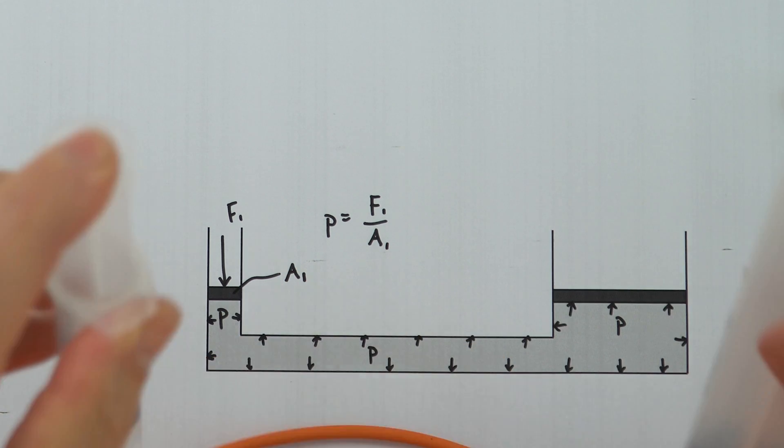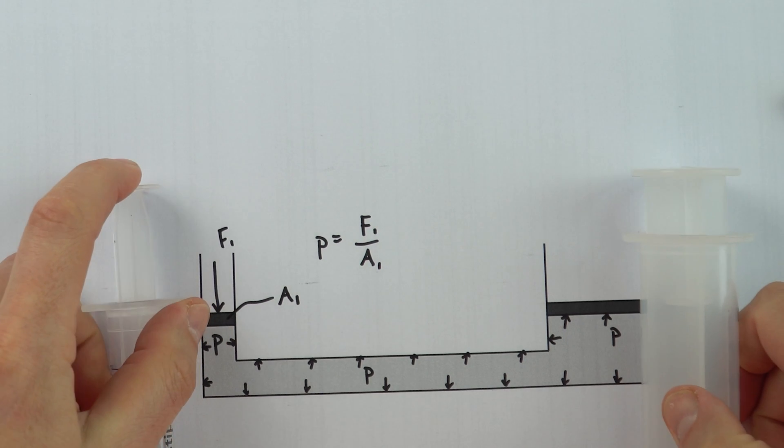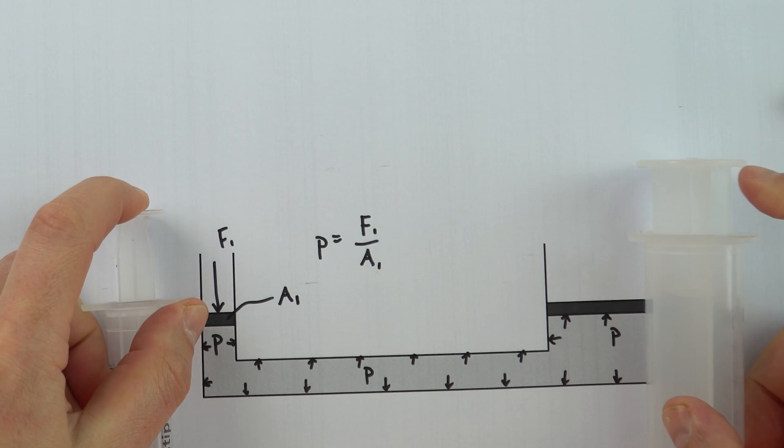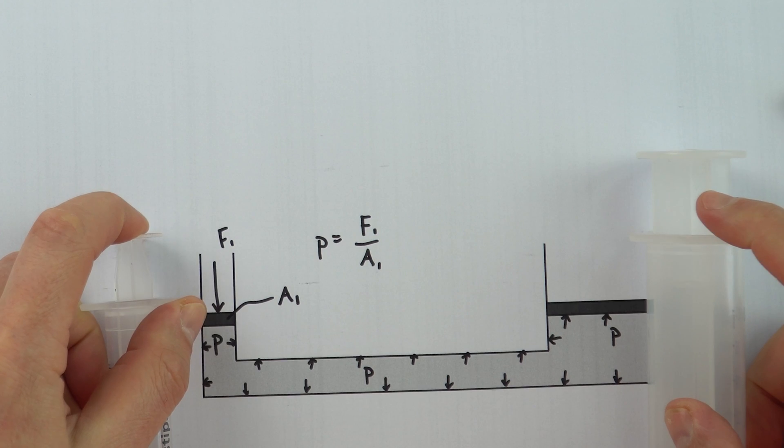We apply a small force in the small syringe and what we can see now is as I do that, the other syringe moves out but only by a small amount.